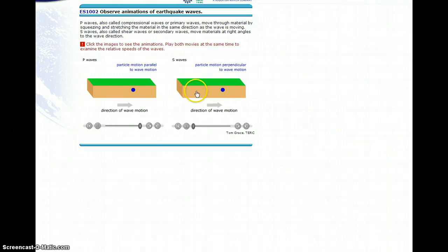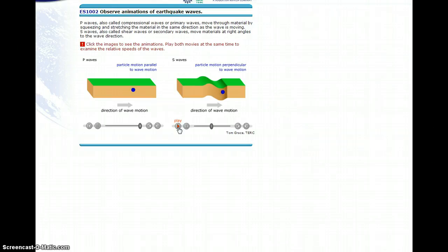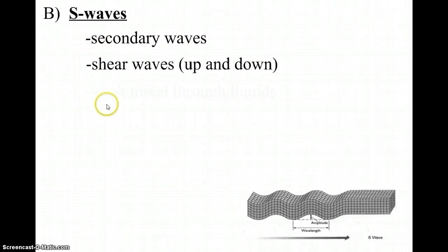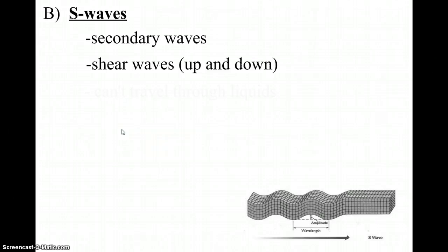S waves are different. When an S wave is sent through the blue dot, you'll notice that S waves make materials move up and down. They're called shear waves — shear meaning moving up and down — and they cause more damage than P waves because they make the Earth move up and down. The S stands for secondary; they travel slower than P waves, so they are the second ones to reach seismic stations. An important property of S waves is that they cannot travel through liquids, which is very significant because it helps us learn about the interior of the Earth.